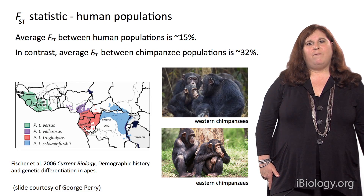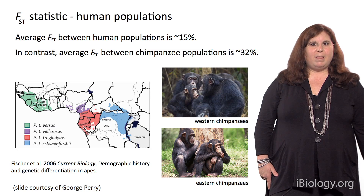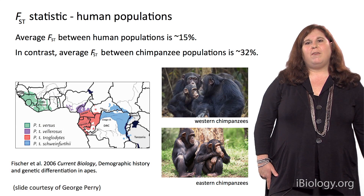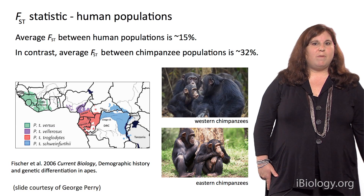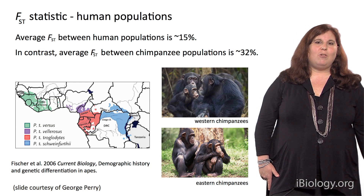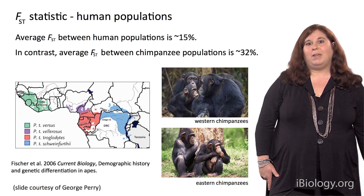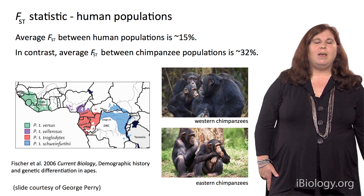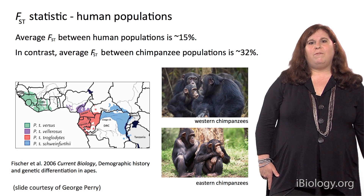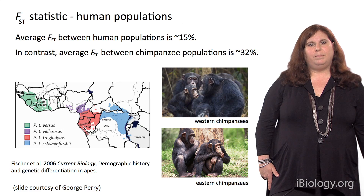Interestingly, if we do this calculation for chimpanzee populations, the FST value is around 32%. So there's actually a lot more differentiation among chimpanzee populations than among human populations, again reflecting our overall close genetic similarity to each other.